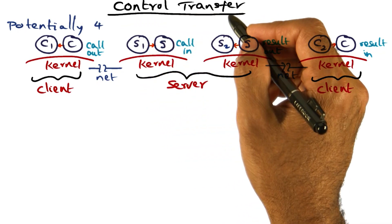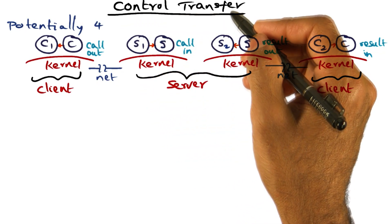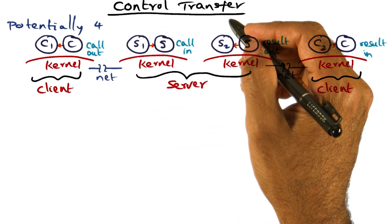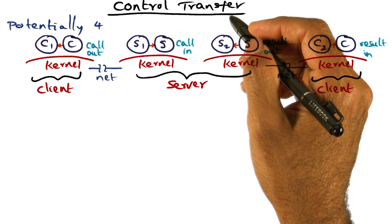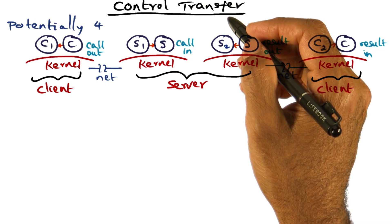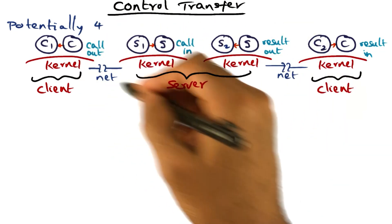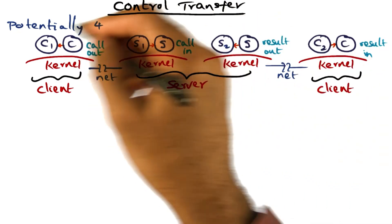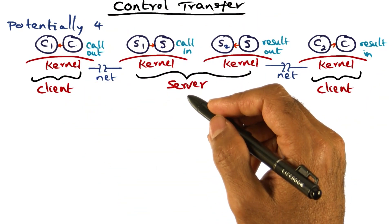The second source of overhead is control transfer overhead — the context switches that have to happen in order to effect an RPC call and return. Let's now look at the context switches that happen in doing the RPC.